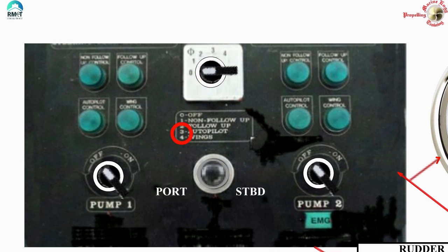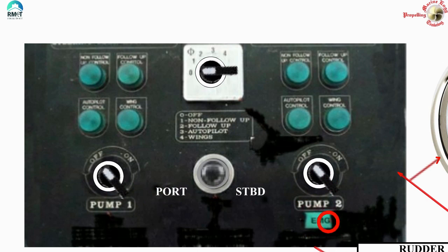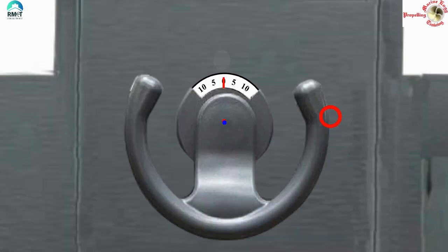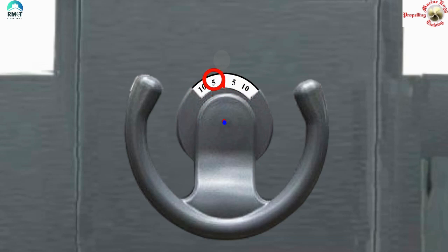Position three is the autopilot. There are two pumps - pump one and pump two. Pump two is connected to the emergency bus bar, so the emergency tag plate is visible. This is the joystick, which comes into operation in the non-follow-up mode. This is the steering wheel - whenever you are on wheel control, this wheel sets the angle of the rudder. When we turn the wheel and set it on 5, we are giving a command to the rudder for 5 degrees to port or starboard.